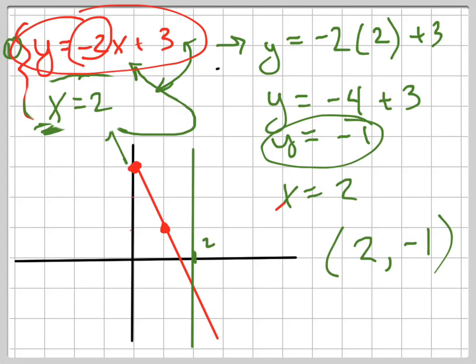Well, where do those two lines intersect? They intersect right here at the point 2, negative 1, which is exactly what I found when I used the substitution method.